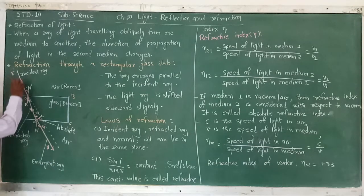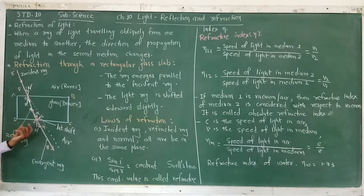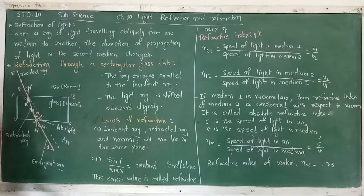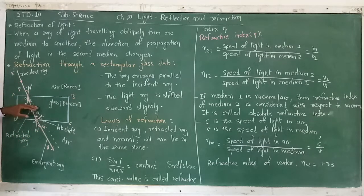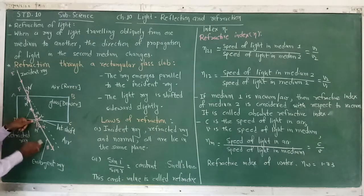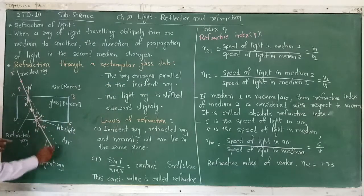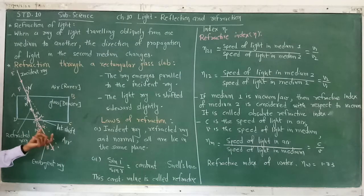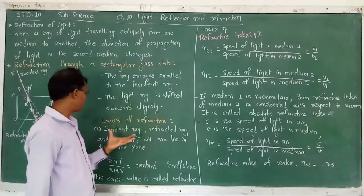The emergent ray is displaced from the original direction. If you extend the line EF with a dotted line, the distance it is shifted is known as lateral displacement. The ray EF is the incident ray, the ray inside the glass from O is the refracted ray, and the ray from O to S to H is the emergent ray. The emergent ray is parallel to the incident ray, and the light is shifted slightly to the side — this is known as lateral displacement.